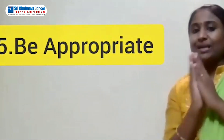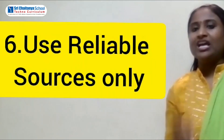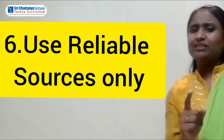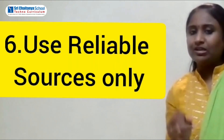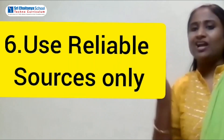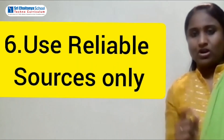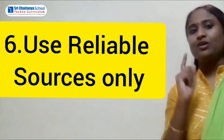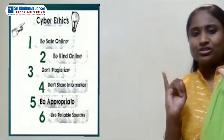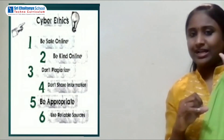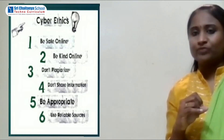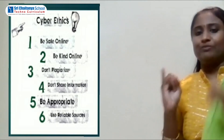The sixth rule is: Use reliable sources only. Use only the well-known, popular, and recommended resources whenever you go online and browse for some kind of information, because that will prevent your system from virus attacks. So, the six cyber ethics rules are: Stay safe online, Stay kind online, Don't plagiarize, Don't share information, Be appropriate, and Use reliable sources.